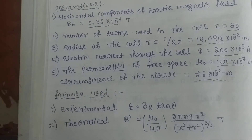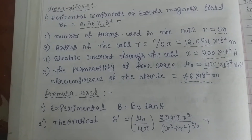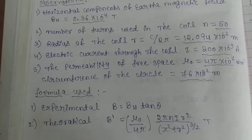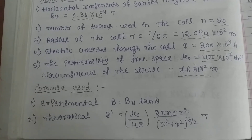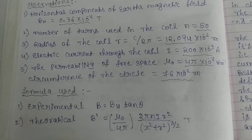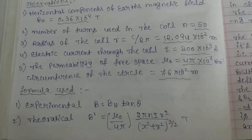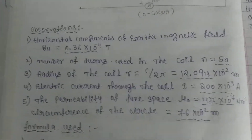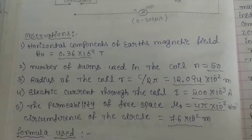In order to calculate the variation of magnetic field of a circular coil carrying current, we have the formula: B is equal to B_H tan θ — that is what we calculate experimentally. By theoretical data we calculate the same magnetic field using the formula B dash, which is the theoretical formula used to calculate the magnetic field in the current-carrying loop.